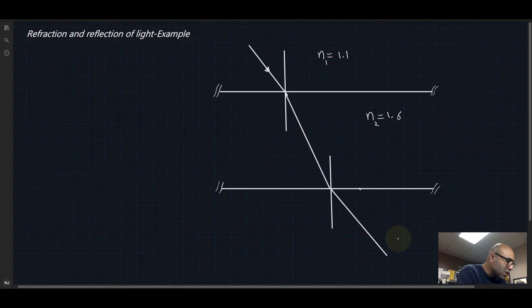I'm going to call this n equals 1 and it's equal to 1.1. So it seems that this is light coming, maybe let's assume this is air. But this is not, the light is coming in air going through a glass.